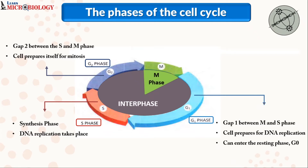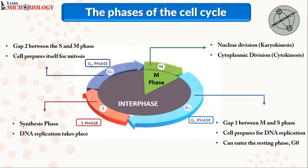In the M phase, nuclear division — which is called karyokinesis — takes place, and during this nuclear division, the DNA will be separated into two portions for the two daughter cells. Additionally, the M phase has a cytoplasmic division called cytokinesis, where the cytoplasmic contents are segregated and equally distributed to the two daughter cells.